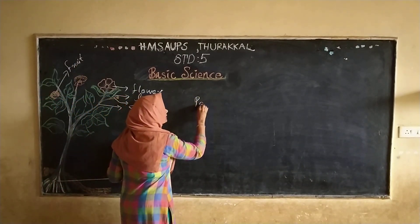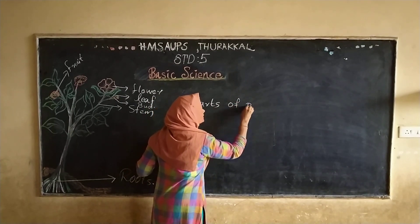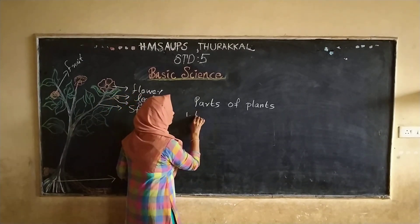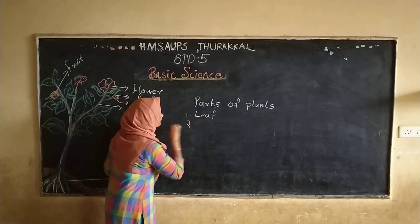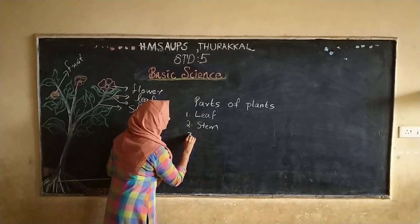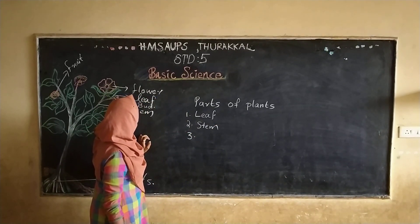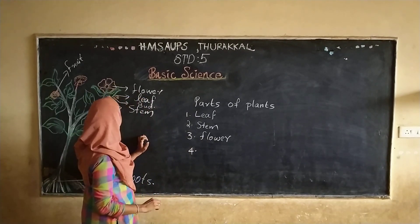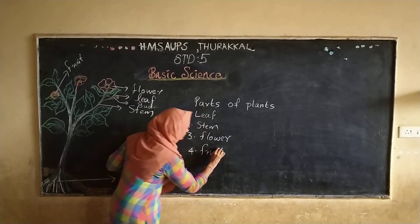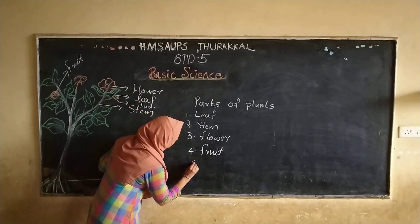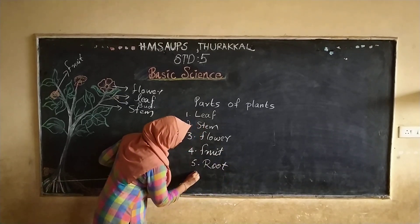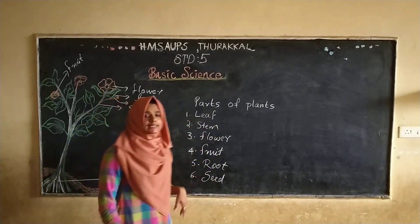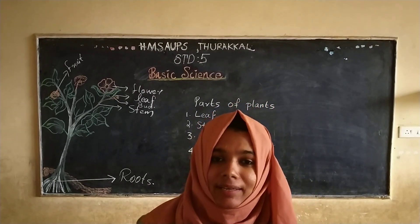So the important parts of plants are: first, leaf; second, stem; third, flower; fourth, fruit; fifth, roots; and sixth, seeds. These six parts are very important to a plant.